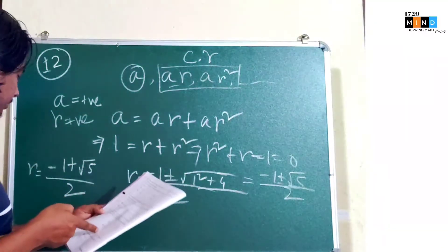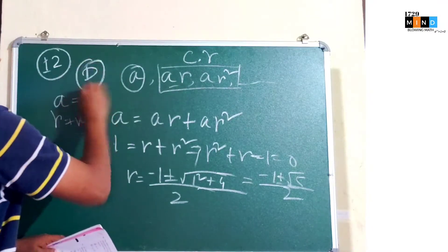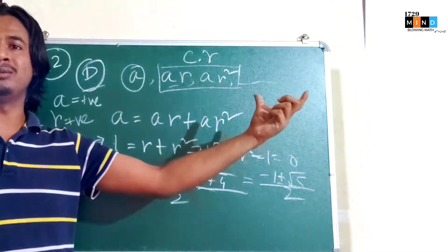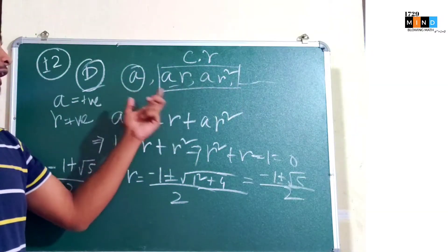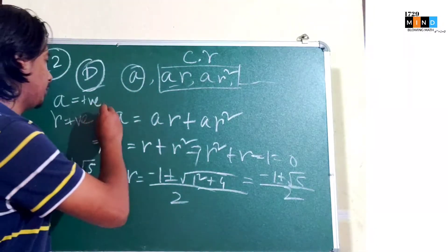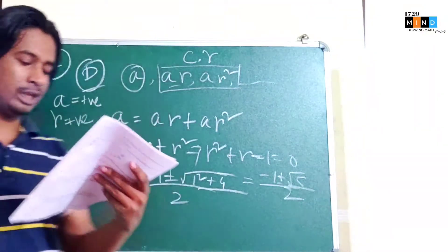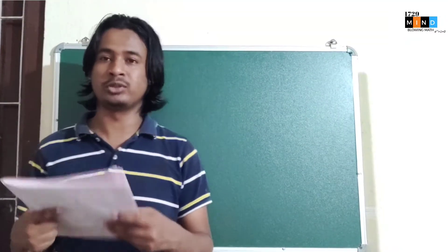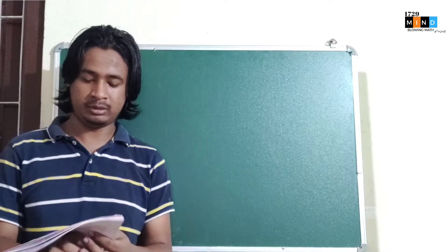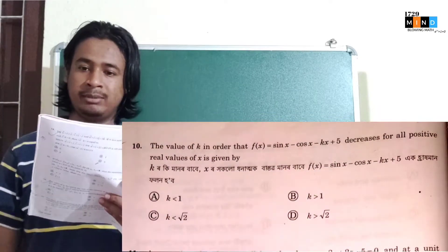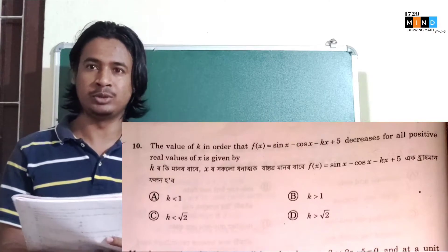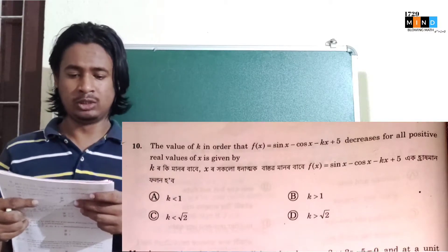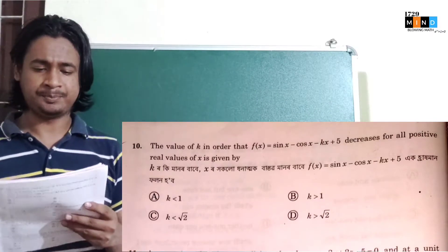So option D, root 5 minus 1 divided by 2. So option D is the correct one, so it's an easy question. So this is question number 12. So next question number 10, question number 10 is little bit trickier.